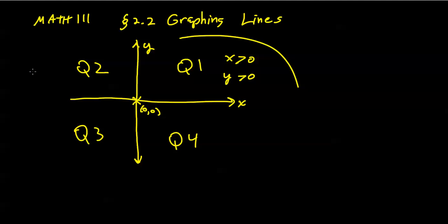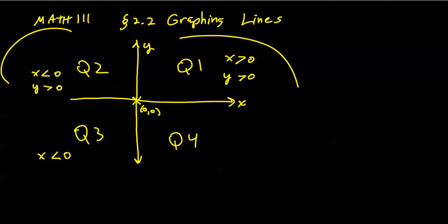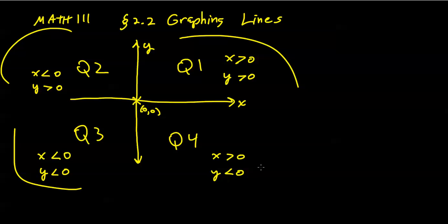In the second quadrant, x values are left of zero but y values are still above the x-axis, so x is negative and y is positive. In the third quadrant, x is negative and y is also negative. And in the fourth quadrant, x is positive and y is negative.